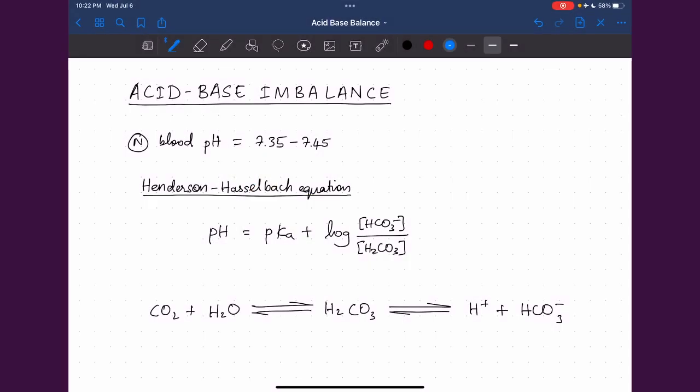Hello and welcome back. Today we will talk about acid-base imbalance. Till now we were studying about acid-base balance, how the body maintains the blood pH between 7.35 to 7.45.